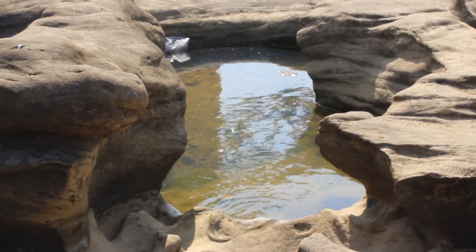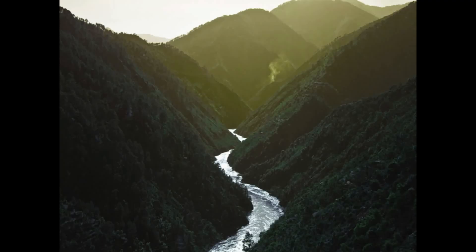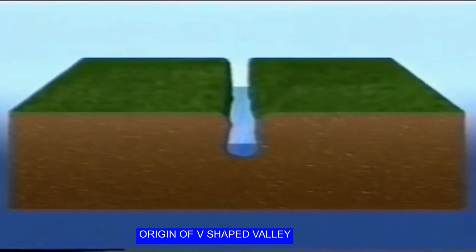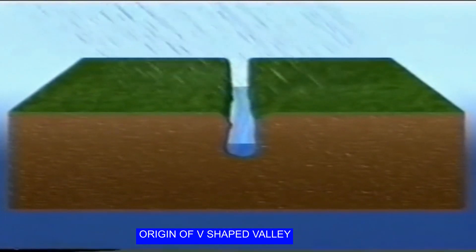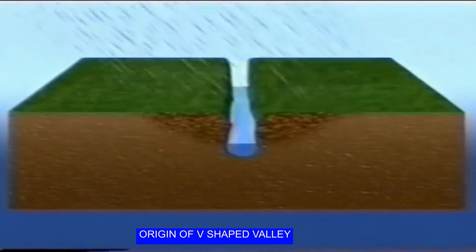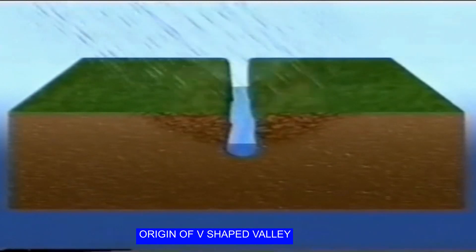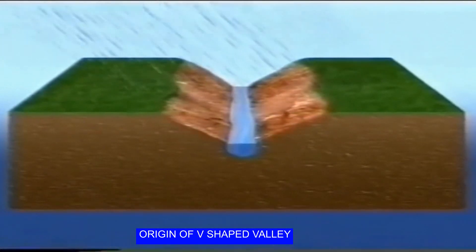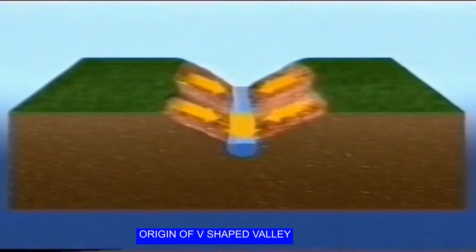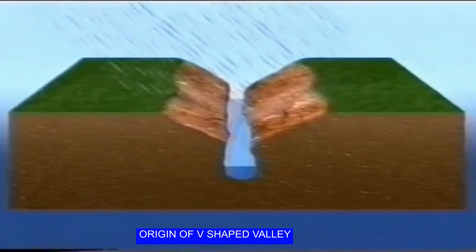V-shaped valleys are found in the upper course of the river and are a result of both erosion by the river and weathering. V-shaped valleys are deep river valleys with steep sides that look like the letter V when a cross-section is taken — hence the name. They are found in the upper course because this is where the river has the greatest gravitational potential energy and so the greatest potential to erode vertically.